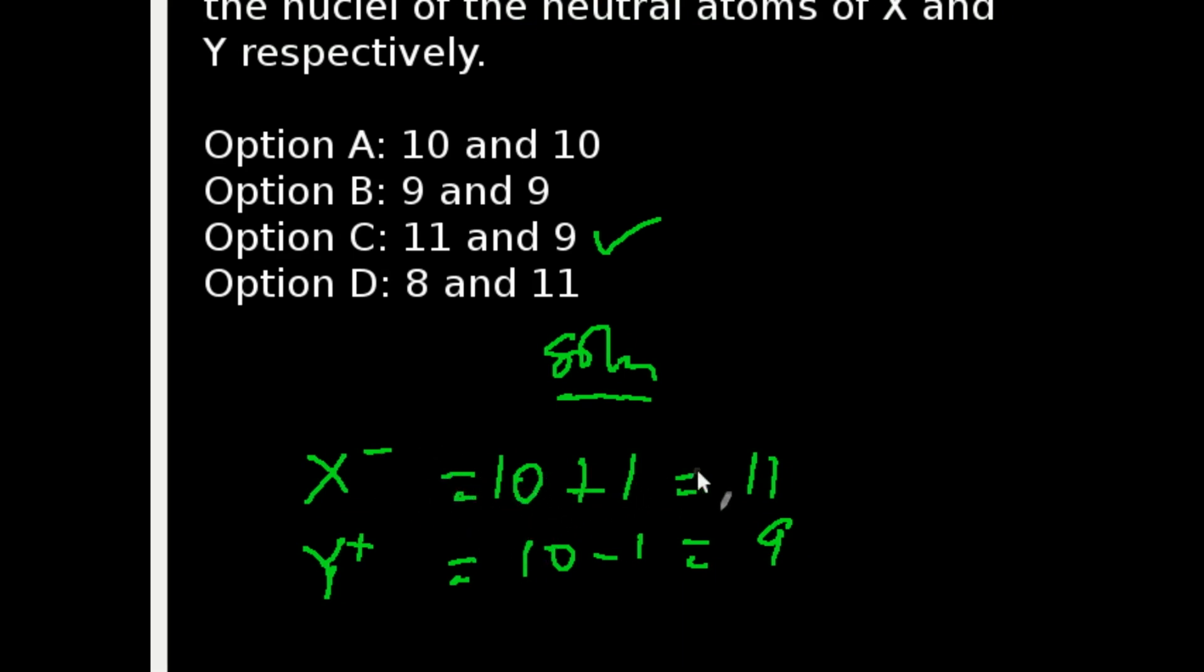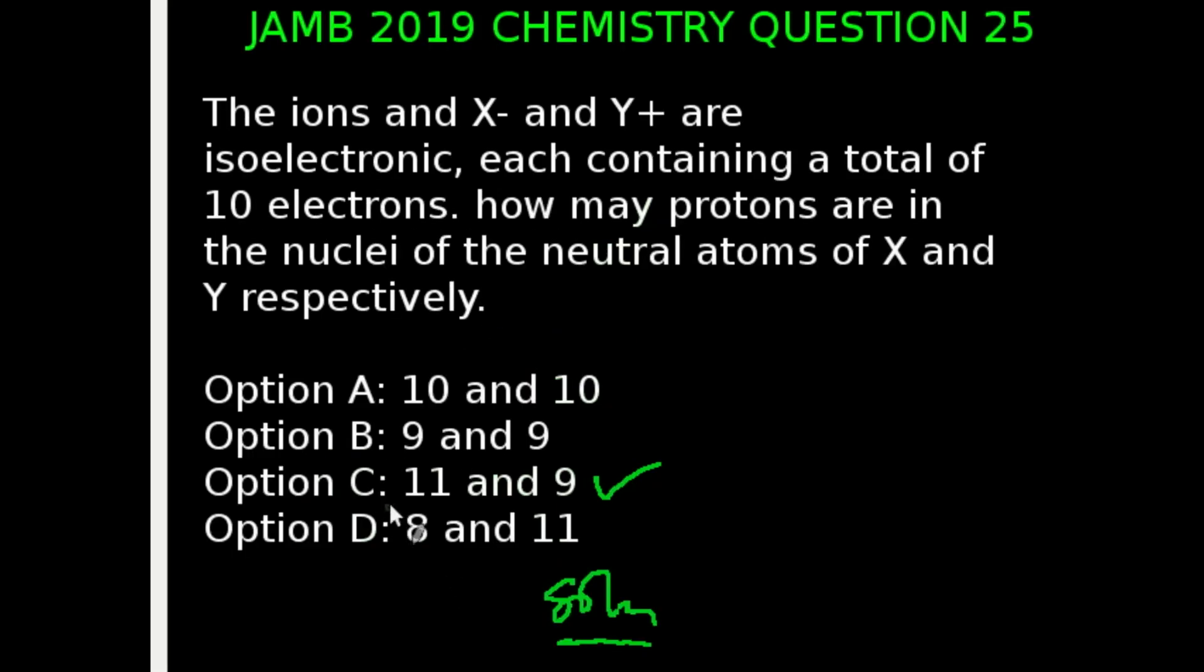So that's going to be 10 plus 1. And on the other side of the coin, if we have Y⁺, it means the atom has lost an electron. That's going to be 10 minus 1. So we're going to be having 11 and 9. So the correct answer to this question is Option C.